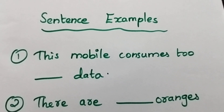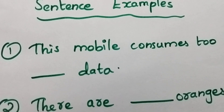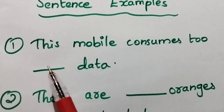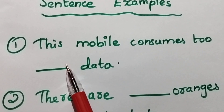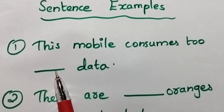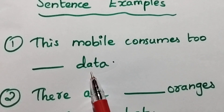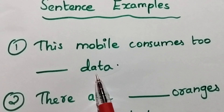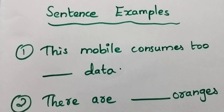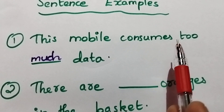To make this clearer, here are five sentence examples. First: 'This mobile consumes too ___ data.' Should you use much or many? Check the noun — 'data' is an uncountable noun, so the answer is 'much': 'This mobile consumes too much data.'